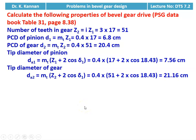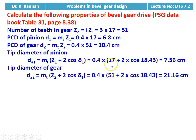Next, we calculate the properties of the bevel gear drive. Equations are available in table number 31, page number 8.38. Number of teeth on the gear: Z2 = i × Z1 = 3 × 17 = 51. PCD of pinion: D1 = mt × Z1 = 0.4 × 17 = 6.8 centimeter. Tip diameter of pinion: 0.4 × (17 + 2) × cos 18.43° = 7.56 centimeter. Tip diameter of gear: 0.4 × (51 + 2) × cos 18.43° = 21.16 centimeter.